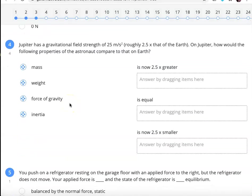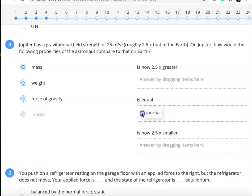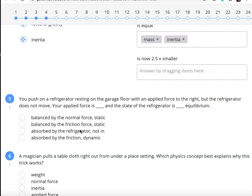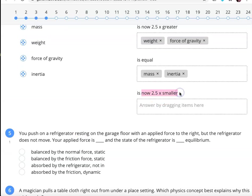For number four, we're talking about going to a different planet. They would have the same mass and the same inertia on the new planet. But Jupiter has more weight and more force of gravity. The 2.5 times smaller in this problem is a distractor. Just because it's an option doesn't mean something needs to go there.